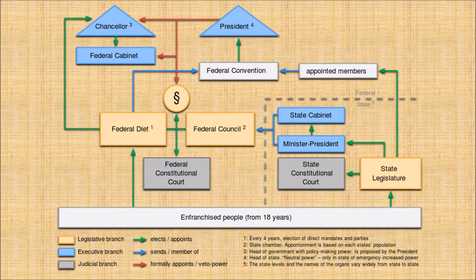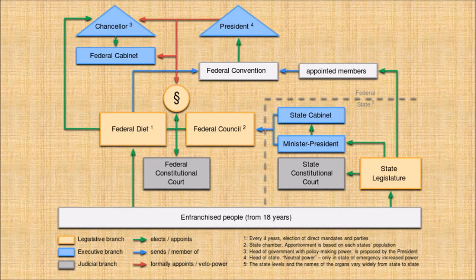This is how the Bundestag is elected and comprised, and usually you have several parties in it. The lowest number of parties ever was three, mainly in the 1960s. Today it is four or five, and it may be six after the next election — it is really always in flux. I will go over the current parties a little bit later on.